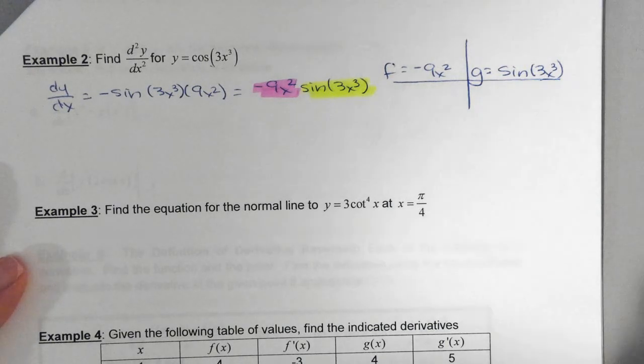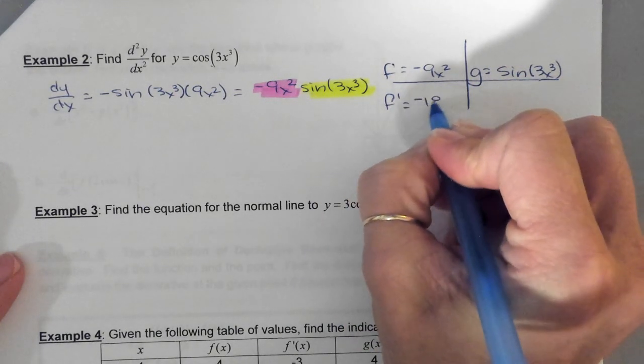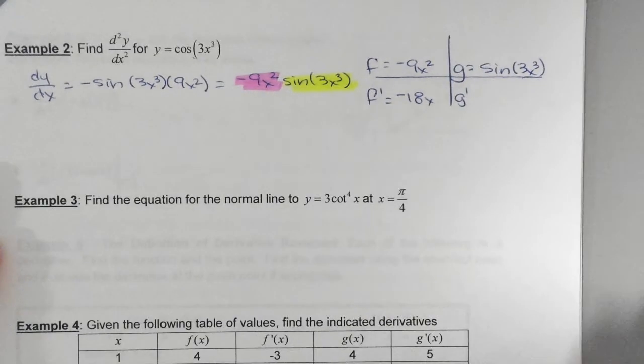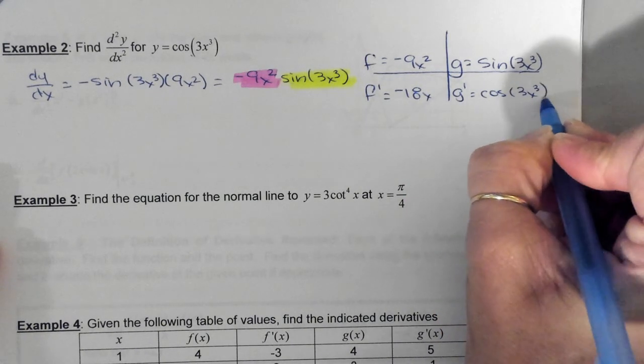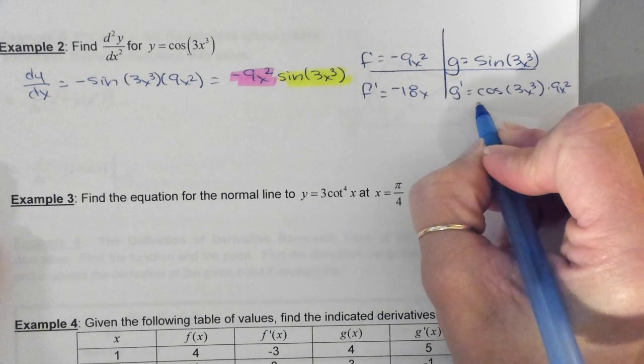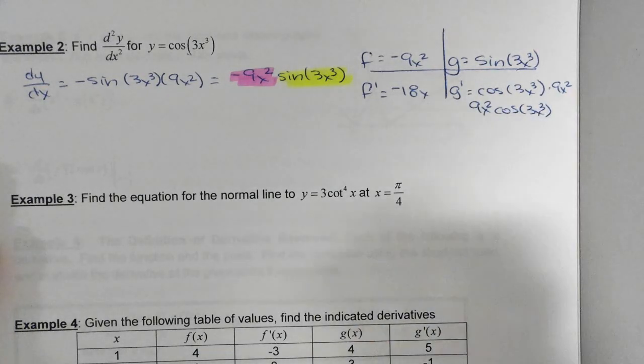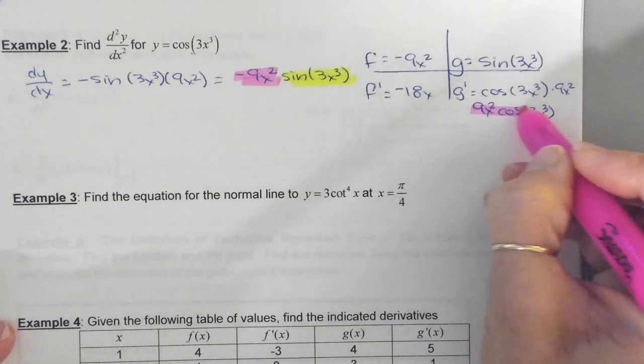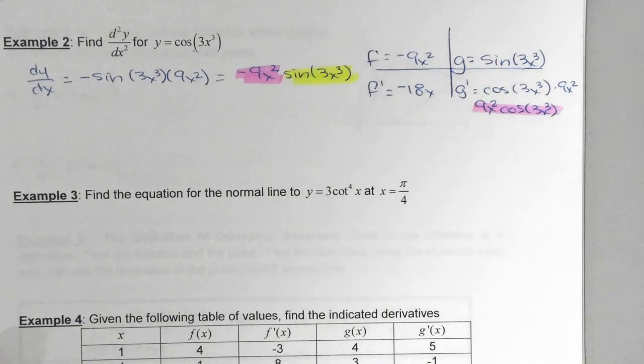So let's find f prime and g prime. What's f prime? That's a nice quick one. Perfect, thank you. Negative 18x. g prime requires the chain rule, right? So we'll start with the outside, so that gives us what? Cosine of 3x cubed times 9x squared. Everyone see that? So I'm just going to write it as 9x squared cosine 3x cubed. So this is the g prime that I'm going to use. They are the same. I just rewrote it. Okay, you guys ready? Second derivative?